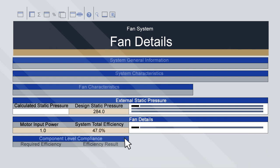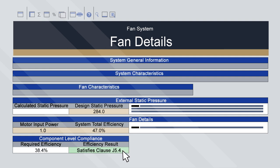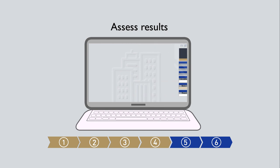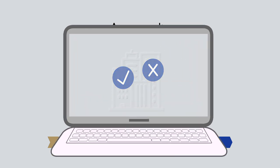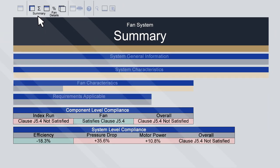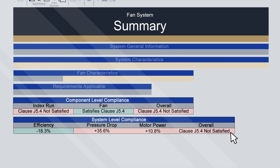The calculator will now determine if the fan satisfies Clause J5.4 at a component level. In this example, it does. Step 5: assess the results. Returning to the Summary sheet, the results at the system level are shown. This system doesn't satisfy Clause J5.4 and requires better energy efficiency.